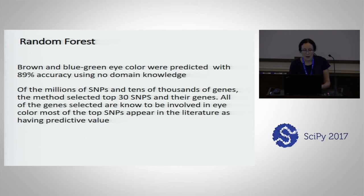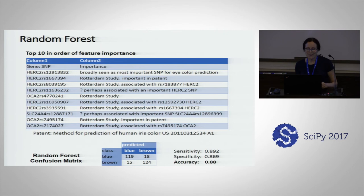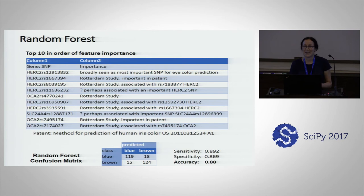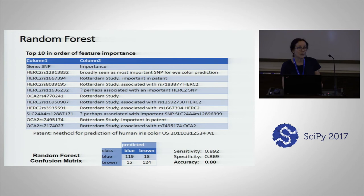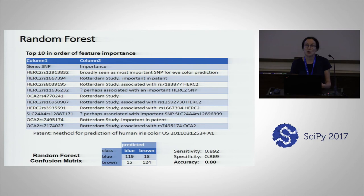The top SNPs in the top 10 appear in the literature. Looking at the table, the top SNPs have appeared in the Rotterdam study or in a patent that made it easy to look up our results. Sometimes a SNP is in linkage disequilibrium with one that's really important to prediction, and the patent provided that information. There were only two question marks in the top 10, and they were near something that is an important SNP. So out of millions of SNPs, almost every one of the top 10 is known to be important in eye color prediction.